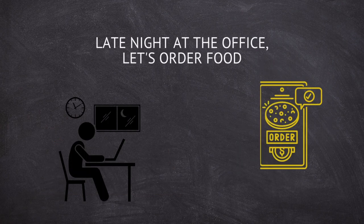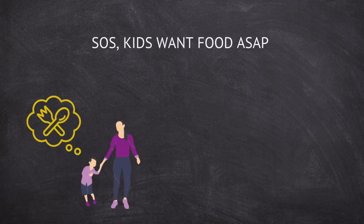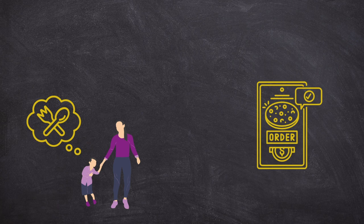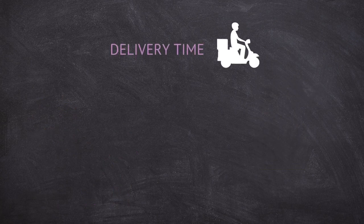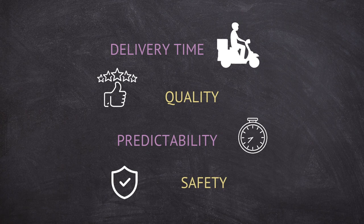We are presented with two different clusters of people. On one hand, we have the late night at the office, let's order food group. And on the other hand, we have the SOS, need food for the kids ASAP group. The main metrics we have established are delivery time, quality in the menu, order accuracy in the taste and products used, predictability in the order time, and safety of the establishment and the produce.